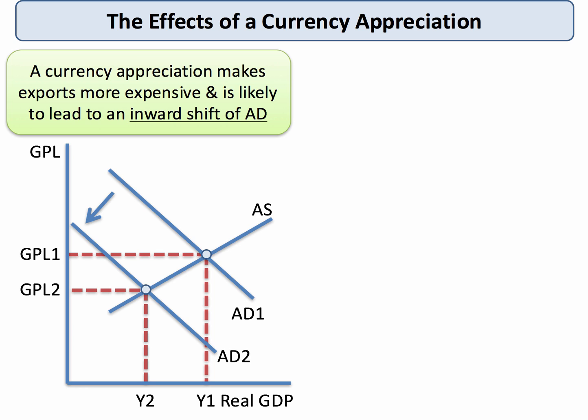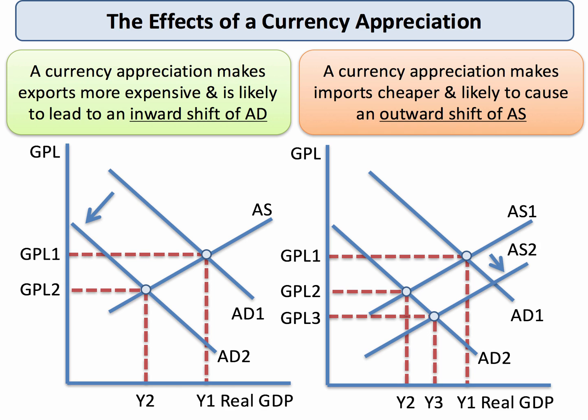Let's use an AD/AS analysis to show the effect of an appreciation. A currency appreciation makes it harder for a country to sell exports in overseas markets, so a stronger currency could lead to an inward shift of aggregate demand — shown in my diagram as AD1 shifting to AD2 — which could cause recessionary conditions and falling national output. However, currency appreciation also makes imports cheaper, including raw materials, component parts, and essential technologies. So a rise in the exchange rate could also cause an outward shift of aggregate supply, which would be better for corporate profitability, output, and investment.